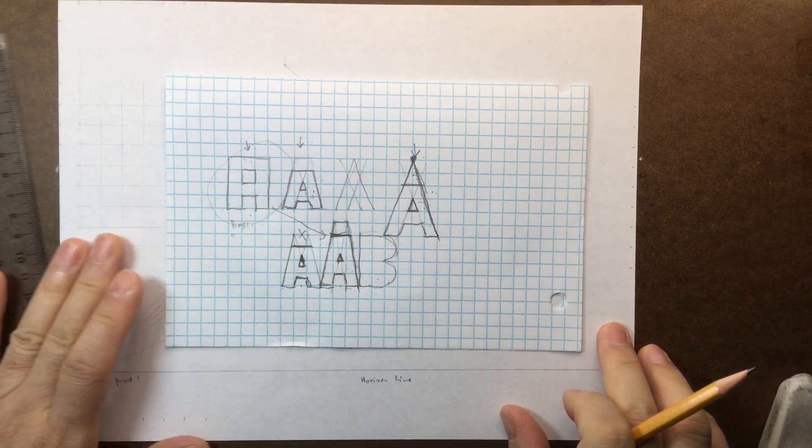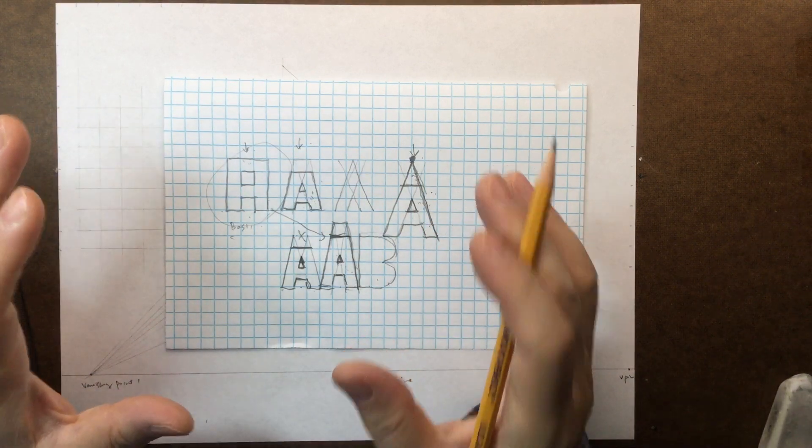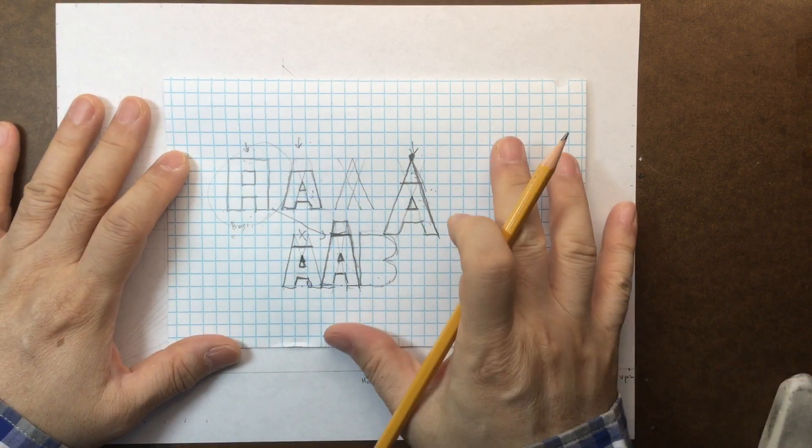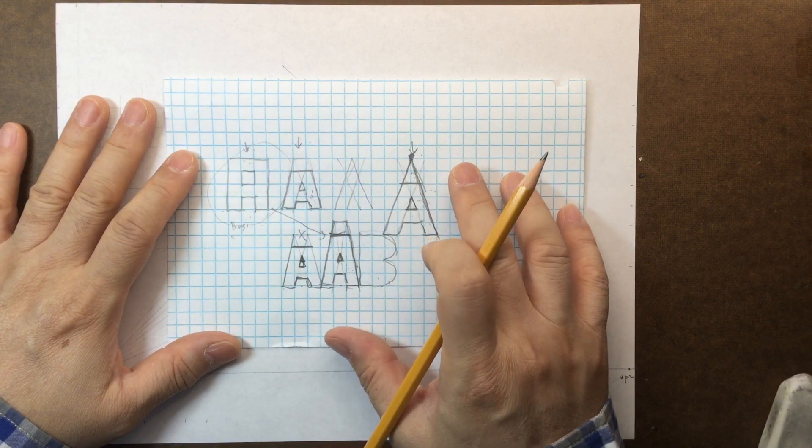So in previous video, we talked about the benefit of using the grid to draw the A. There are so many variations that you can create.